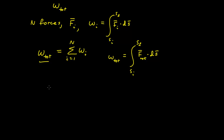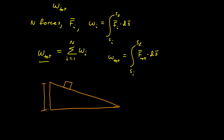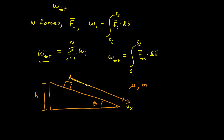I want to solve the general case — a block at any height h above the ground, sliding on an incline of any angle theta, with a coefficient of friction mu between the block and the incline, and mass m. For any situation with objects sliding with friction, I want to know what is the total work done on this object as it slides down the incline, covering some distance along the incline before it reaches the bottom.